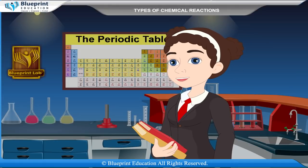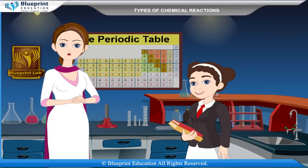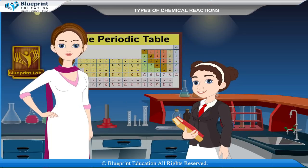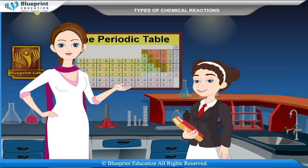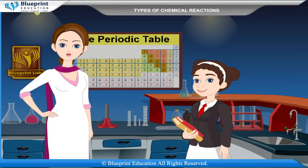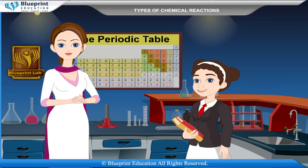A chemical reaction is usually accompanied by easily observed physical effects such as the emission of heat and light, the formation of a precipitate, the evolution of gas, or a colour change. Absolute confirmation of a chemical change can only be validated by chemical analysis of the products. Let's do an experiment to perform some chemical reactions.